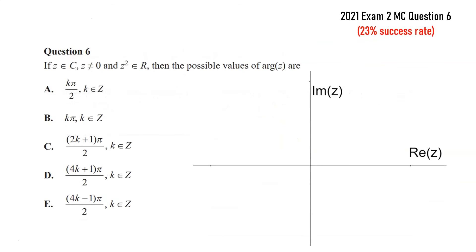Alright, so going back to this multi-choice question, z is a complex number, non-zero, and the square of z is a real number, then the possible values of arg(z) are? Well, to start with, a real number lies on the real axis, the x-axis there, and the key to this question is to remember De Moivre's theorem.